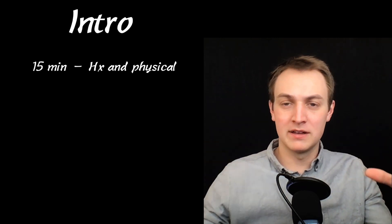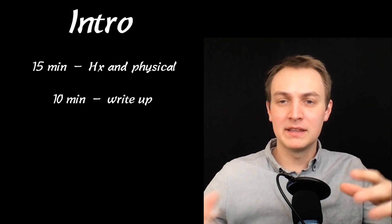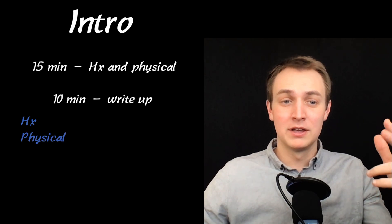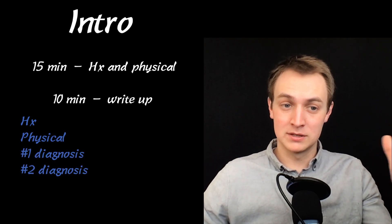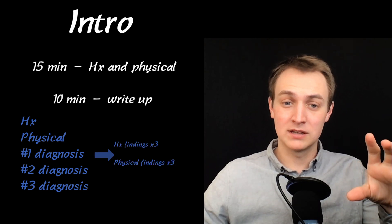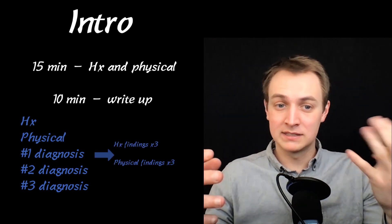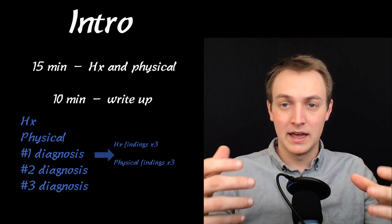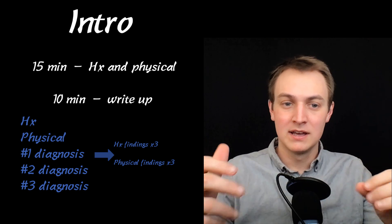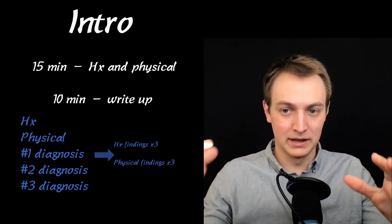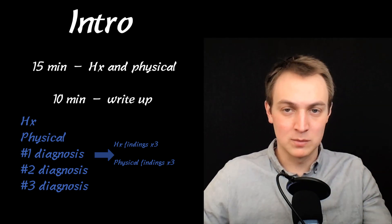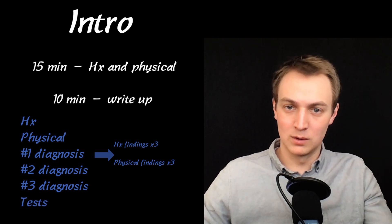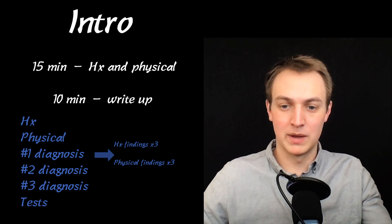You'll do a 15-minute history and physical and then you get 10 minutes to do the write-up. In the write-up you're going to write the history, the physical, your number one diagnosis, number two, and number three diagnosis. For each of those diagnoses you'll give three history findings and three physical findings that support that diagnosis — those can be positive or negative findings. And then lastly you'll write the tests that you would order to further diagnose this patient.